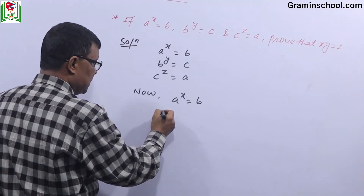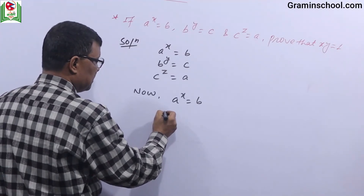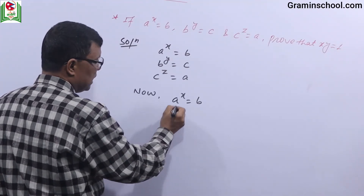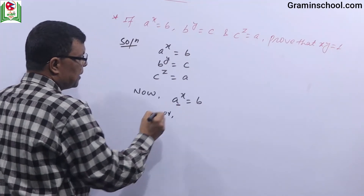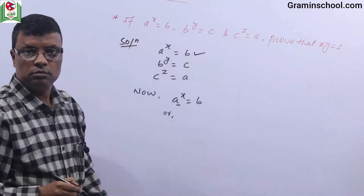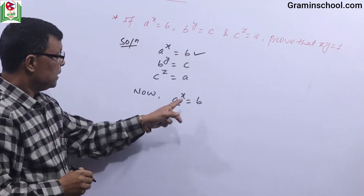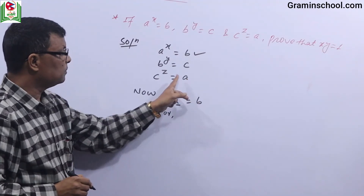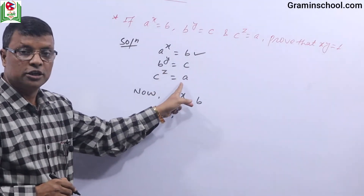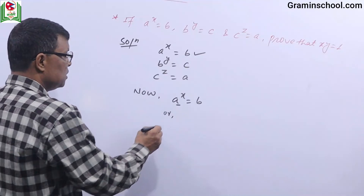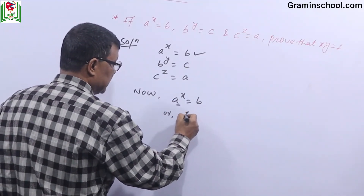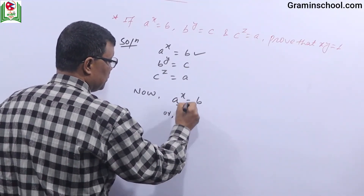B power Y, C power Z is equals to C. C power Y connecting C power Z is equals to B. First condition: A will be C power Z, which is a condition. C power Z X.